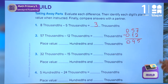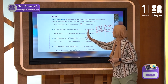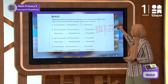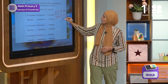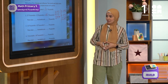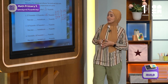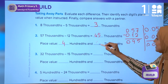Now if I want to change this to thousandths, I solve it again. Using the same concept: 57 thousandths minus 12 thousandths — I subtract 2 from 7 to get 5, and 1 from 5 to get 4. So my answer is 45 thousandths. Now let's check the place value: the number in the hundredths place is 4, and the number in the thousandths place is 5.